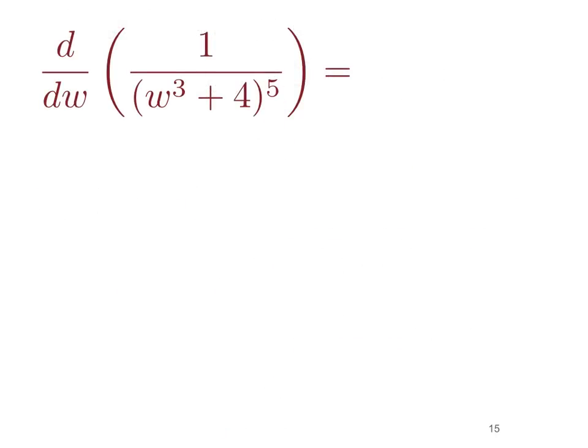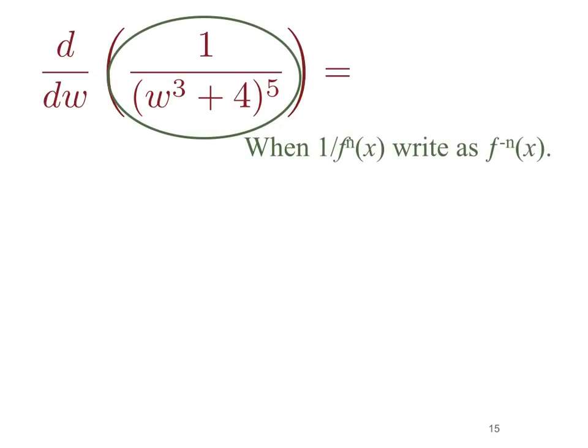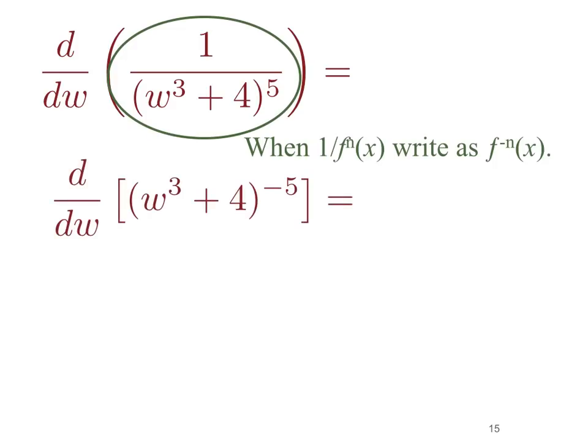As a final example, we want to look at a wonderful place to use the chain rule. We want to take the derivative with respect to w of 1 over w cubed plus 4 to the 5th power. Clearly we could use the quotient rule, but if we rewrite the function — whenever we have 1 over f to the nth power, we write that as f to the minus n — this problem becomes the derivative with respect to w of w cubed plus 4 to the minus 5. Now we can use the chain rule, with inner function w cubed plus 4 and outer function u to the minus 5 power.